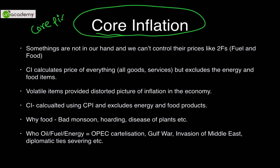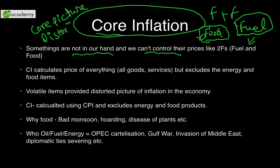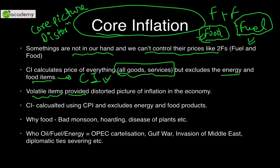Core inflation is the inflation picture after removing distortion caused by volatile items. These volatile items are food and fuel. Food prices can be affected by bad monsoon, plant diseases, or tsunamis. Fuel prices can be affected by cartels like OPEC, the Gulf War, or diplomatic tensions with the Middle East. Since these factors are outside our control, we exclude them and calculate inflation for everything else — this gives us core inflation.